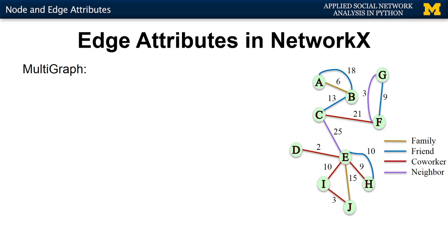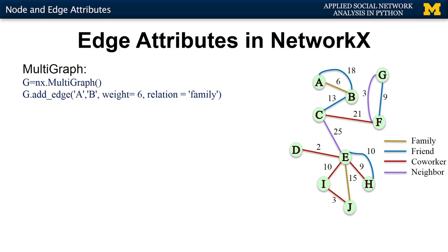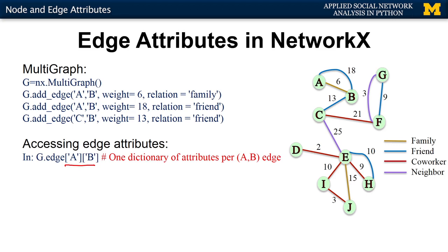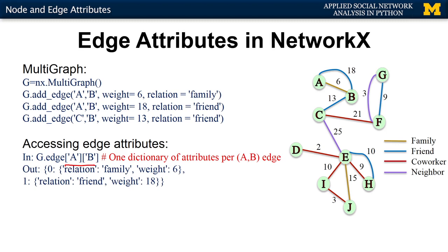Now let's generalize to multi-graphs. You represent such a network using the multi-graph class, adding edges for the same pair of nodes multiple times, sometimes with different weights or attributes. Here we're adding edge a-b twice with different weights and different relations, and the same for c-b. If you ask for the attributes of edge a-b, you get a dictionary for each individual edge — the first edge labeled 0 has relation 'family' and weight 6, and the second has relation 'friend' and weight 18.